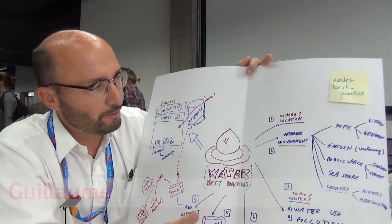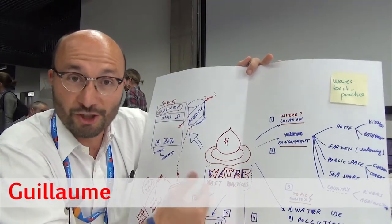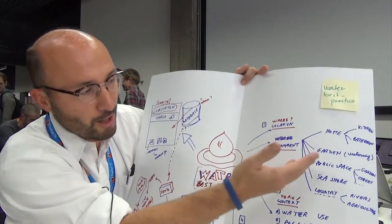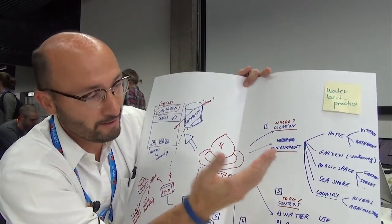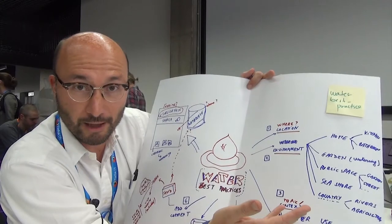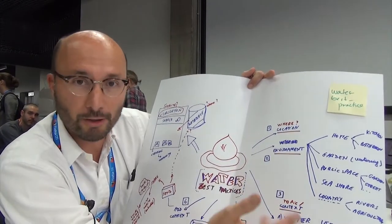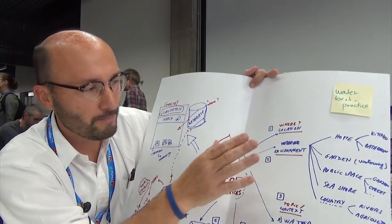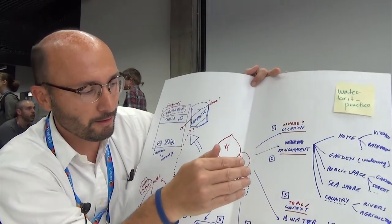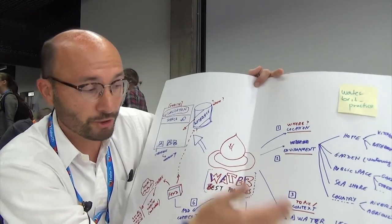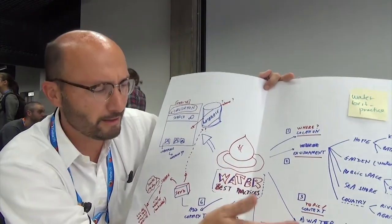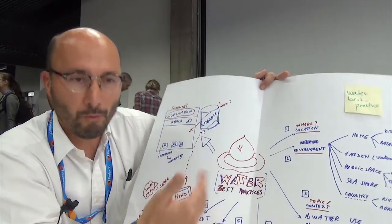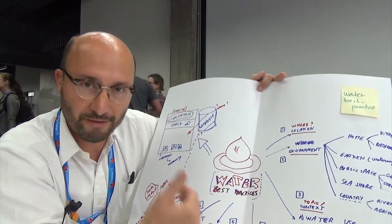This is an app that helps people share what they see around them — it can be at home, in a garden, in a public space, on the seashore, in the countryside, the forest, around a river, or in an agricultural environment. They can identify where they are and what the context is: water use, pollution, recycling, etc., and then share a picture and make a comment about what's happening around the water in their environment.